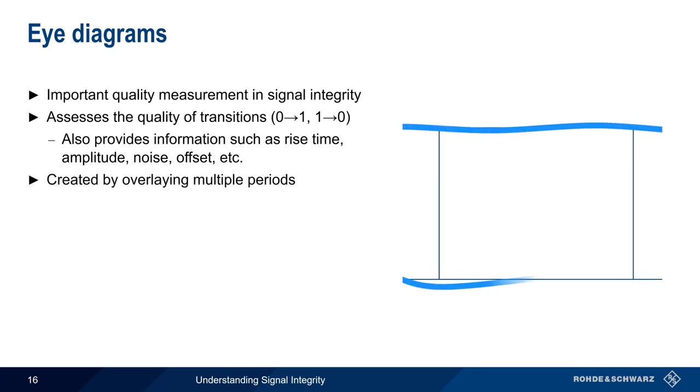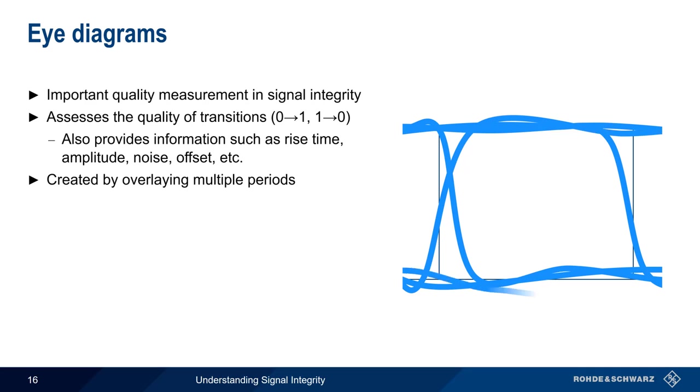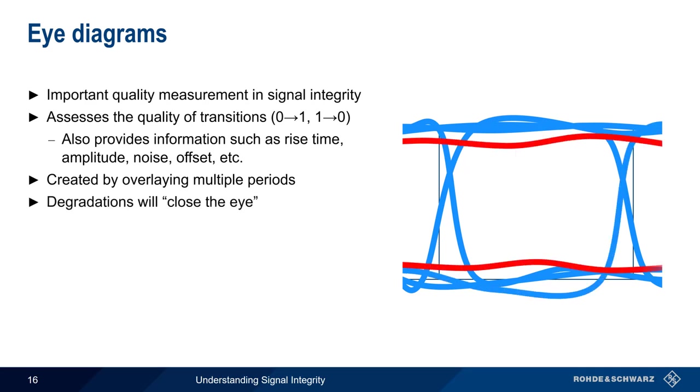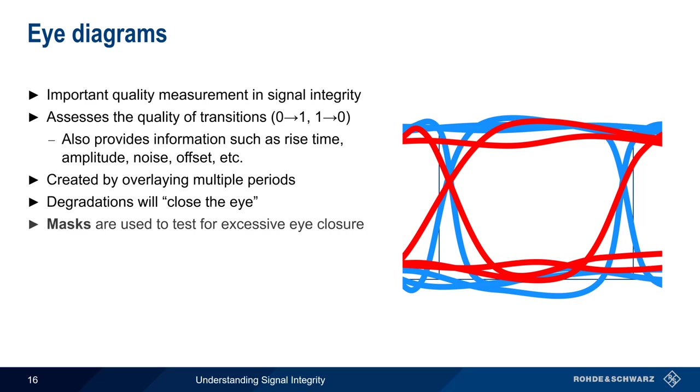Eye diagrams are created by enabling persistence and overlaying multiple periods of a signal. Degradations will close or narrow the eye, and often the nature or cause of this closing, or narrowing, can be determined by visual inspection of the eye. In addition, masks can be used to quantify this level of closure.